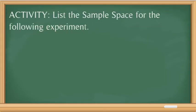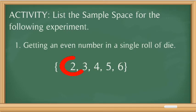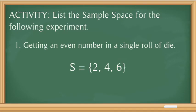So here we have an activity: list the sample space for the following experiment — meaning we need to list the entire possible outcomes. For number 1: getting an even number in a single roll of a die. The sample space when rolling a die is 1, 2, 3, 4, 5, and 6. What is asked is getting an even number, so the even numbers are 2, 4, and 6. Which means {2, 4, 6} is our sample space of getting an even number in a single roll of a die.